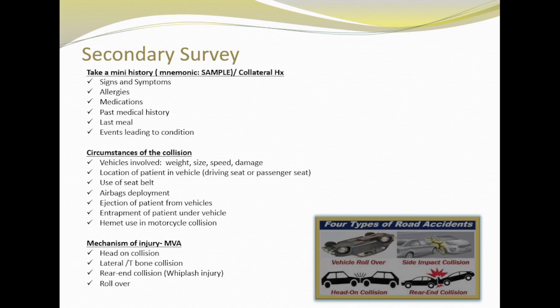Moving on to mechanisms of injury — there are four types of road accidents: head-on collision, T-bone collision, rear-end collision (also called whiplash injury), and rollover. In head-on collision, head, facial, thoracic, pelvic, and lower extremity injuries are common. In T-bone collision, head, C-spine, thoracic, abdominal, pelvic, and lower extremity injuries are common. In rear-end collision, hyperextension of the C-spine is very common, and rollover can cause multiple organ injuries.